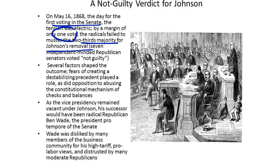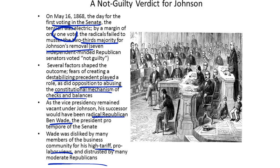Several factors shaped the outcome. People were afraid of setting a destabilizing precedent, as well as being opposed to abusing the constitutional mechanism of checks and balances. As the Vice President position remained vacant under Johnson, his successor would have been Radical Republican Ben Wade, the President pro tempore of the Senate. Wade was disliked by many members of the business community for his high-tariff, pro-labor views, and he was distrusted by many moderate Republicans.